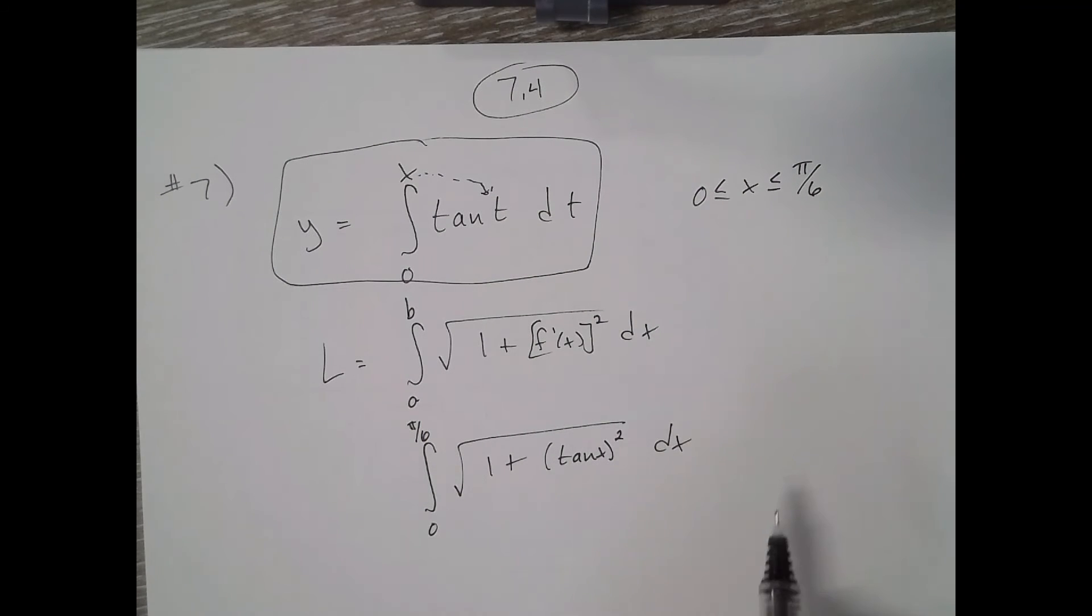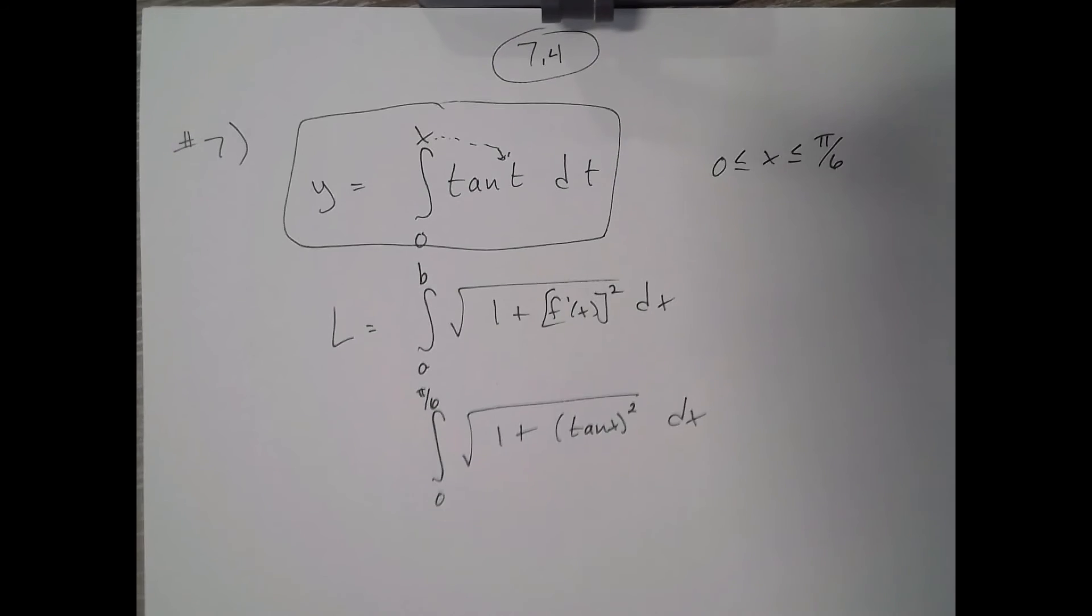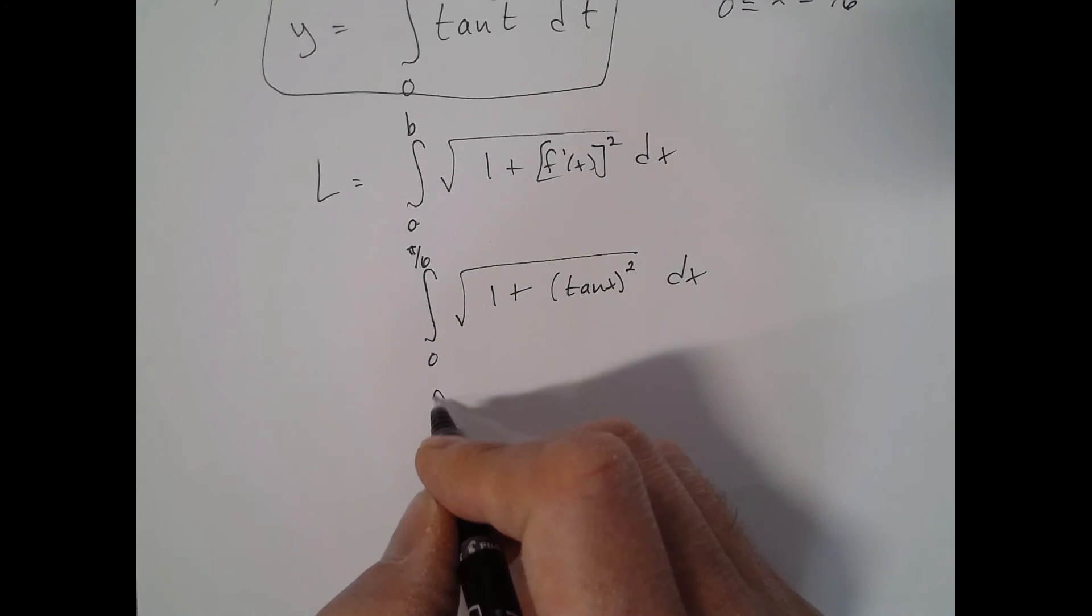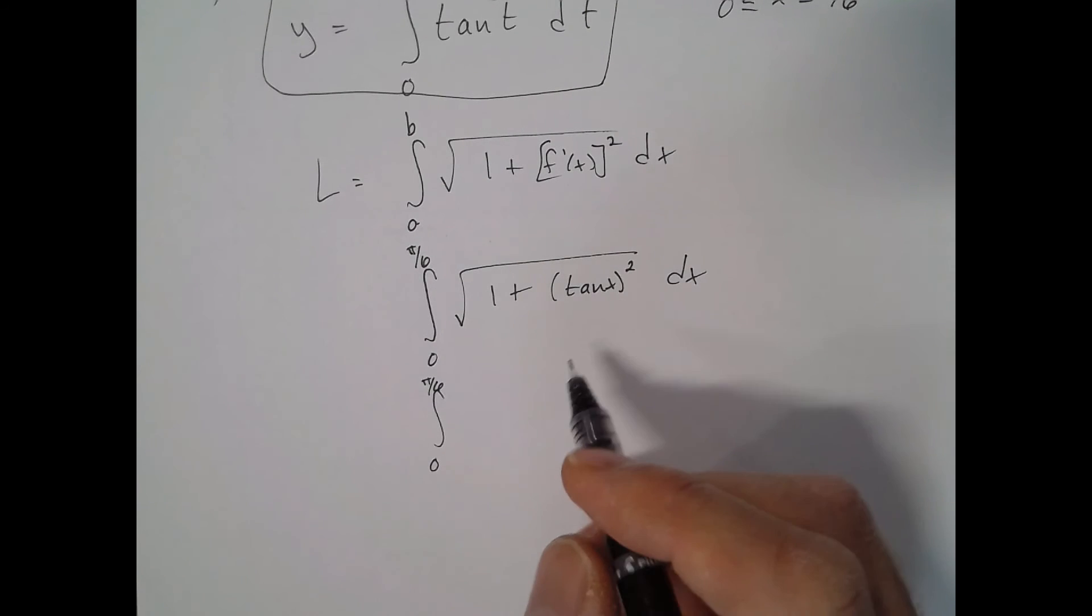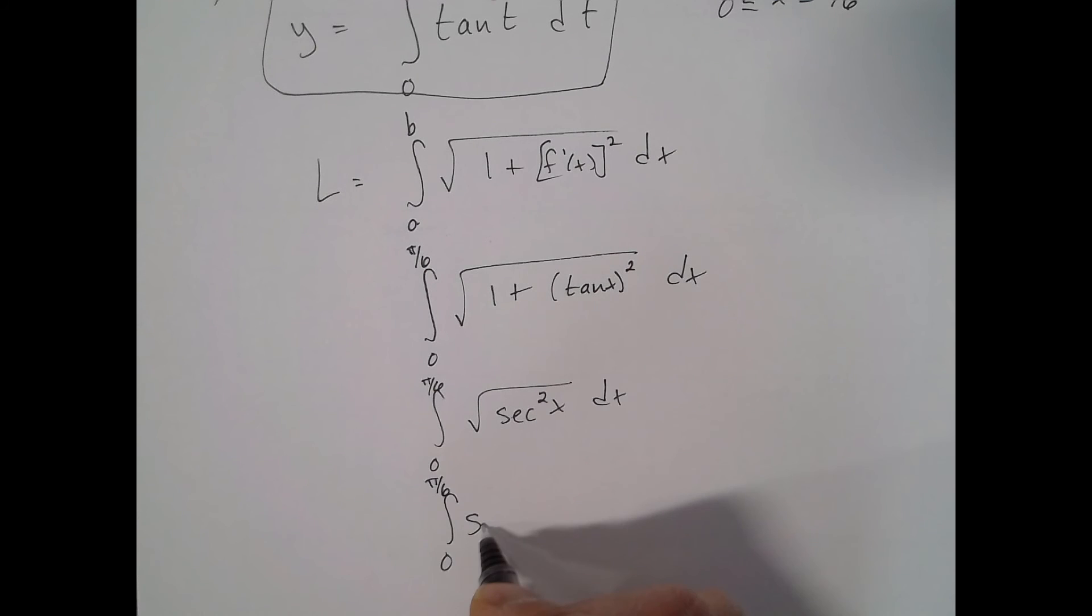So 1 plus tangent squared x is a Pythagorean identity—it's the same as secant squared. So it's the square root of secant squared x, and we end up with the integral of secant x dx from 0 to π/6.